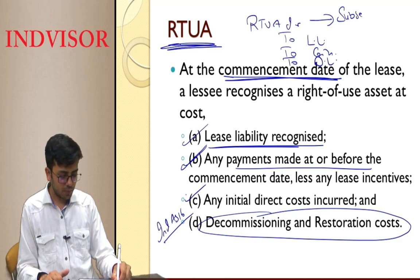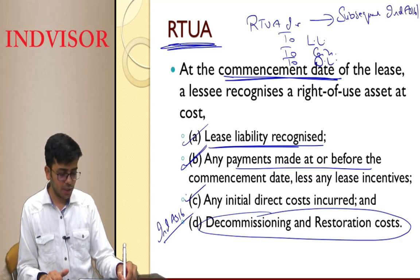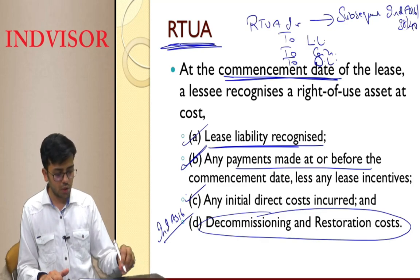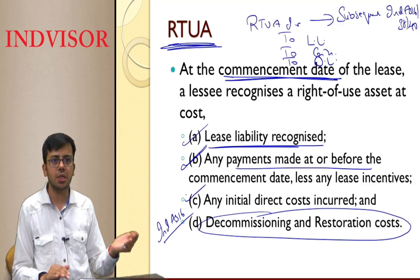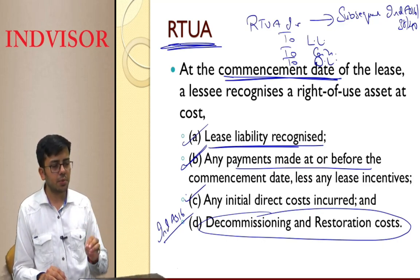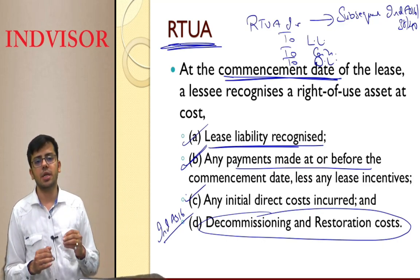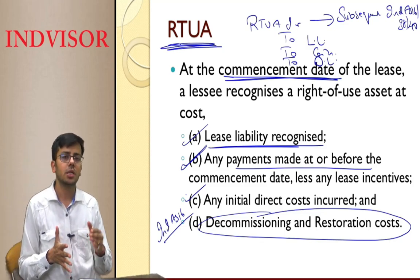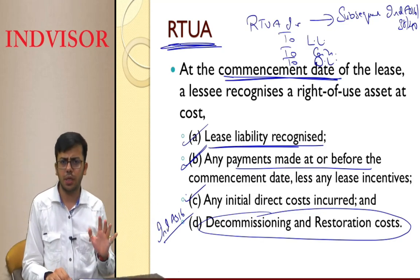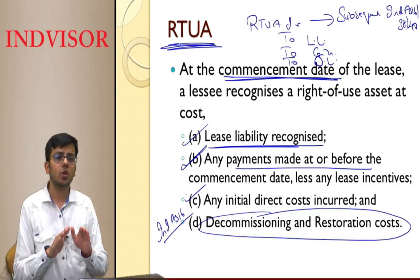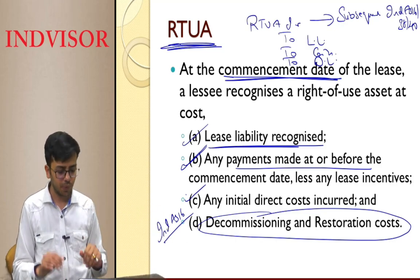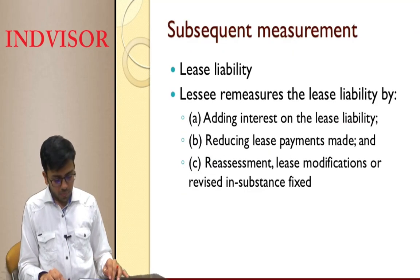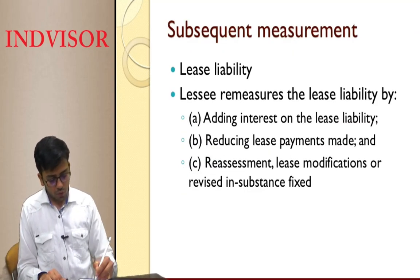For subsequent recognition, the right-to-use asset is accounted the same as per Ind AS 16, 38, or 40 depending on its nature. If it is a PPE, account as per Ind AS 16; if an intangible asset, as per Ind AS 38; and if investment property, as per Ind AS 40. This standard does not cover subsequent recognition of the right-to-use asset.